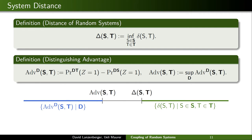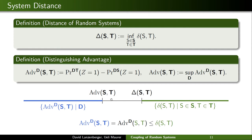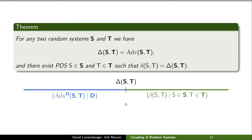One direction is easy to see: the coupling interpretation gives some intuition, essentially saying that if two systems are equal with probability 1 minus delta, then you cannot distinguish better. This shows that the distinguishing advantage cannot be larger than delta(s, t). The question is what is the gap — and interestingly, we have a theorem showing there is no such gap. In particular, there exist PDSs s and t in the equivalence classes such that their statistical distance is exactly the optimal distinguishing advantage between s and t.